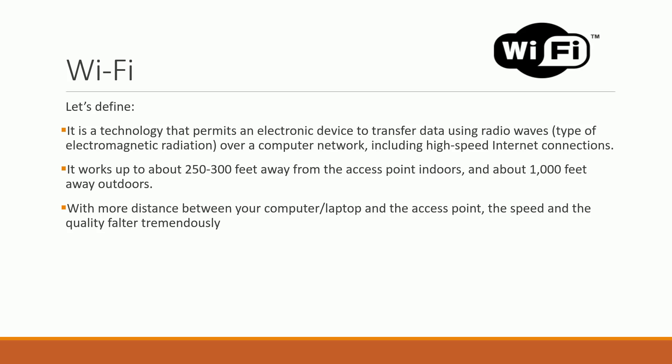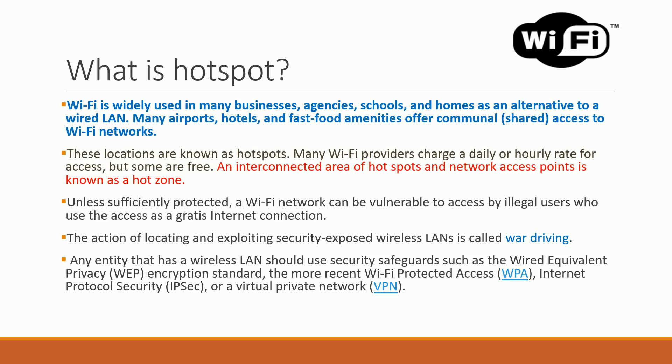Wi-Fi can work 250 to 300 feet away from the access point in an indoor setup, and about 1,000 feet in an outdoor setup. The further you are from the access point, the more the performance degrades. When very close to the access point the connectivity is much faster; when farther away it becomes periodic and slow.